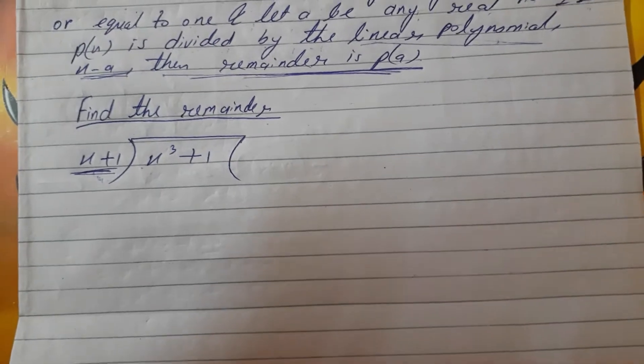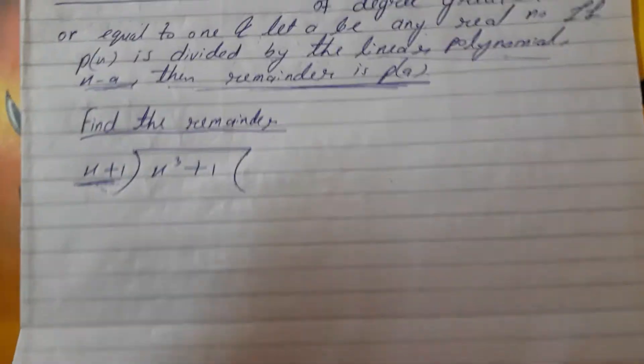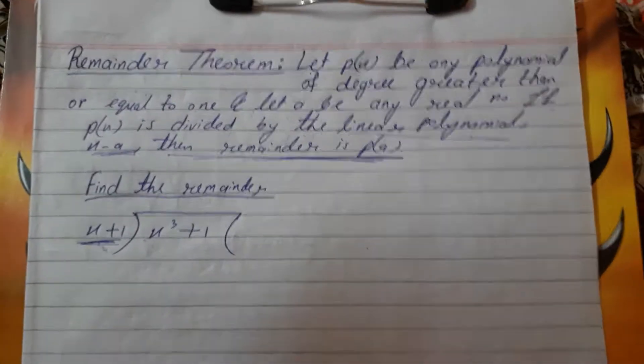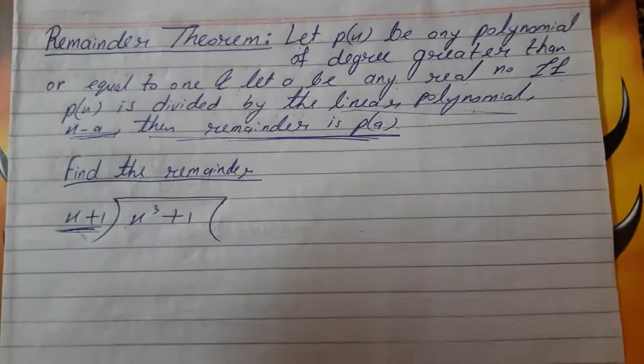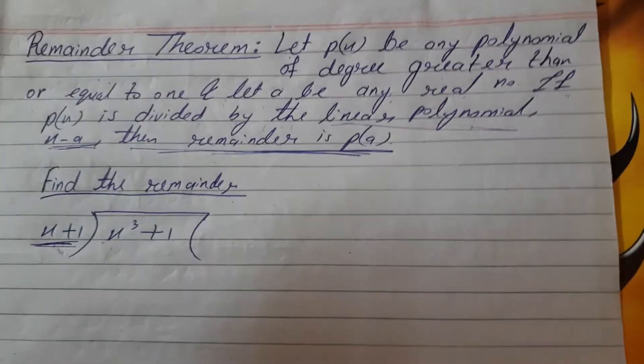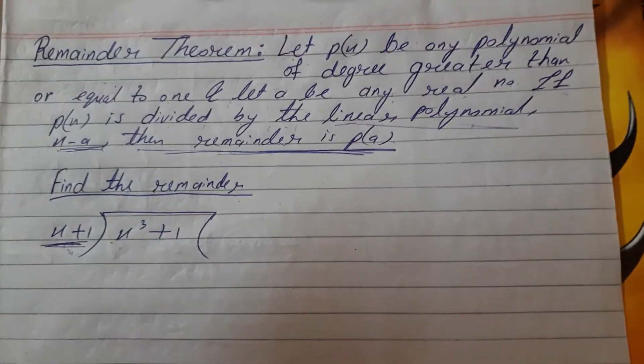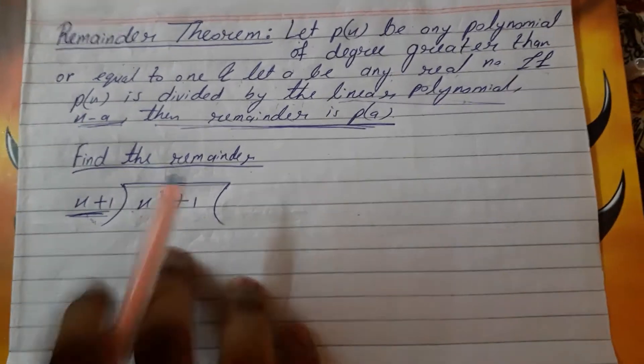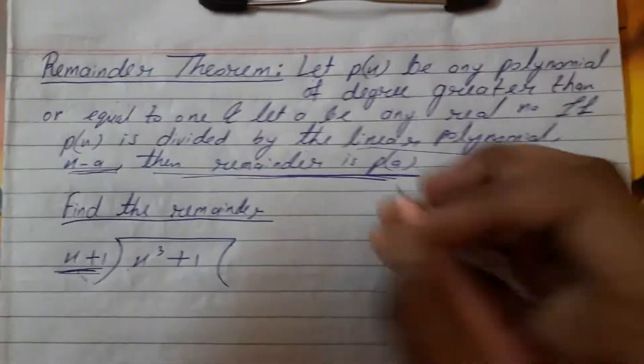Let's see an example, then you can understand well. See, here x plus 1 is the divisor and x cubed plus 1 is your dividend. Now see, we all know that dividend is equal to divisor times quotient plus remainder.